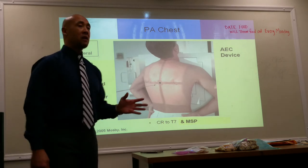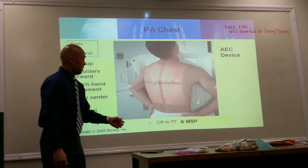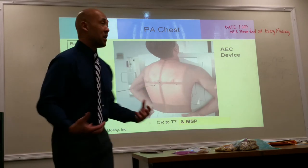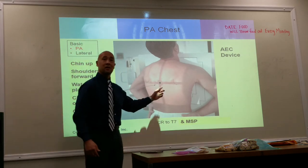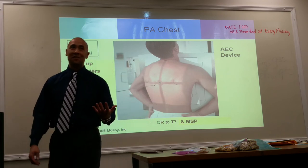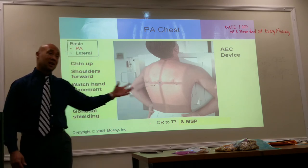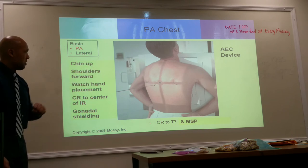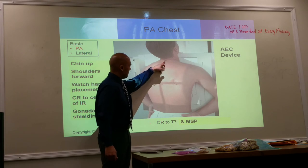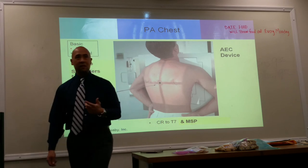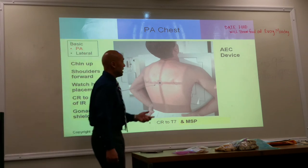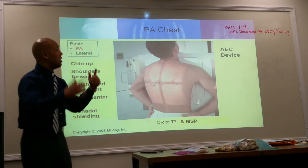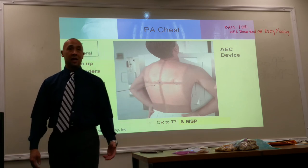Gonadal shielding should be placed in the path of the primary beam, on the patient's back side. A complete wrap-around gonadal shield is preferred, protecting from both the primary beam and scatter radiation coming from the image receptor. With high KV and a thick body part, there is significant scatter radiation to consider for patient protection. The palpable landmark is C7 — about seven to eight inches below that gets you to T7. You can also use the top of your image receptor at C7, or the inferior scapular border as your marker.